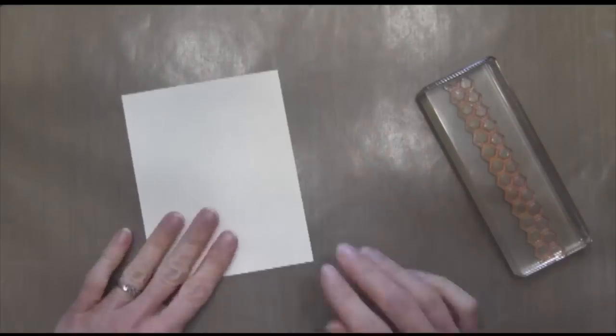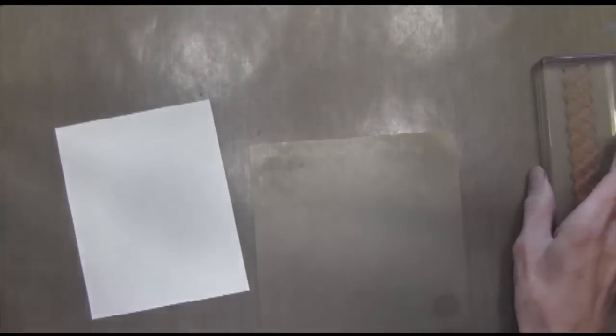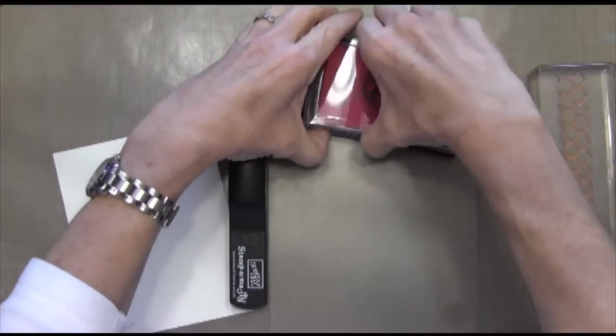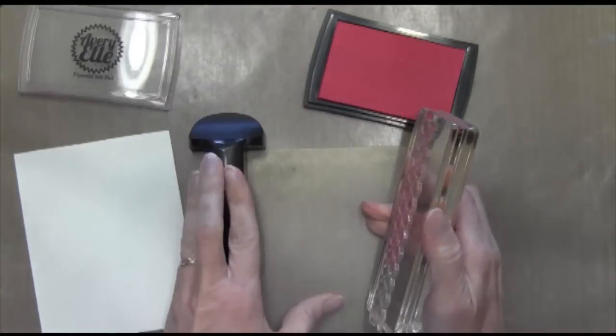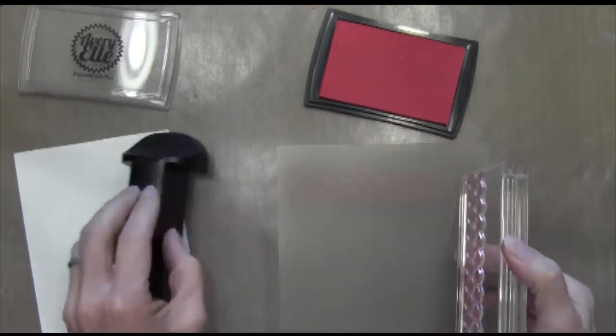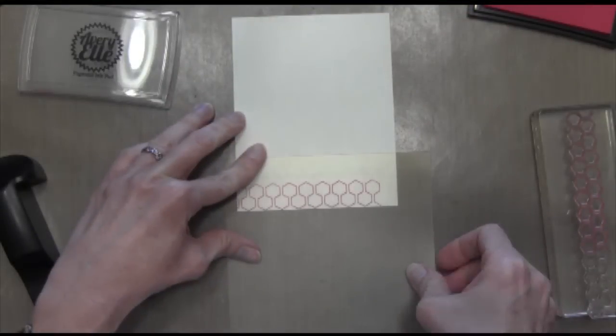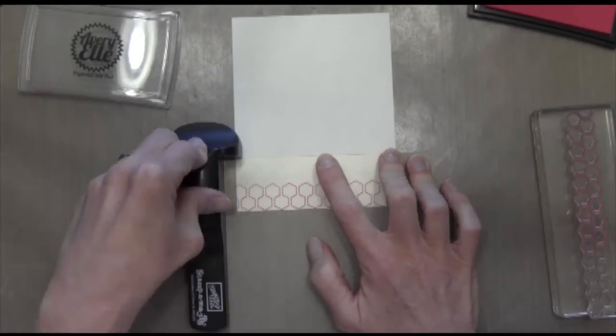I've got some Strathmore watercolor paper because I'm going to be using an aqua painter later. Your stamp-o-ma-jig comes with a plastic sheet and a black handle. You're going to line it up in the corner and then stamp your image. I'm using the raspberry ink and you can just keep using this plastic sheet over and over again.